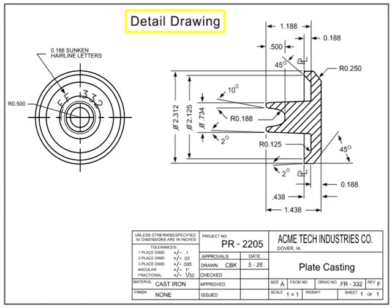A detail drawing is a drawing that contains all the information required for a specific part. There are many different ways a part can come into existence, including casting, machining, welding, purchasing a part, or even modifying an existing part.